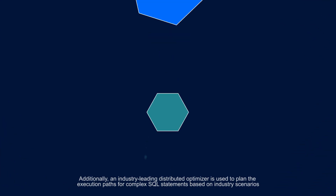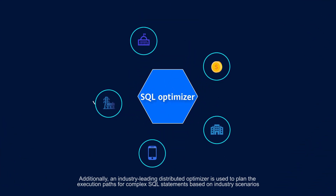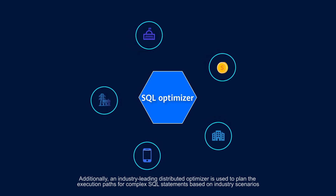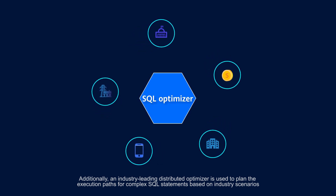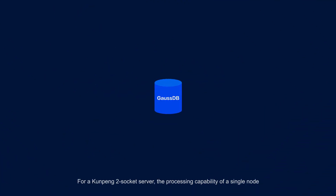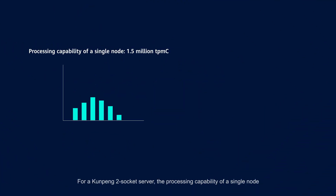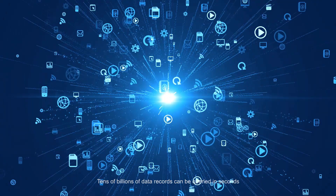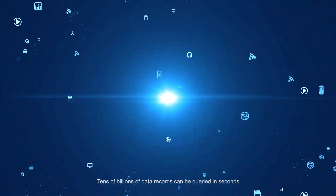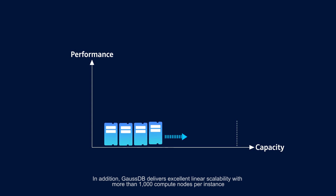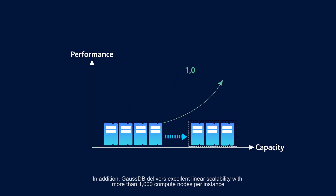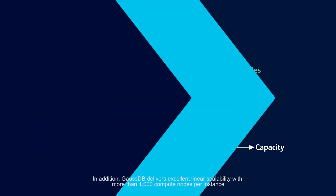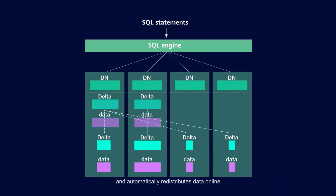Additionally, an industry-leading distributed optimizer is used to plan the execution paths for complex SQL statements based on industry scenarios. For a Kunpeng two-socket server, the processing capability of a single node can reach up to 1.5 million TPMC, and 32 nodes can reach up to 15 million TPMC. Tens of billions of data records can be queried in seconds. GaussDB delivers excellent linear scalability with more than 1,000 compute nodes per instance and automatically redistributes data online.